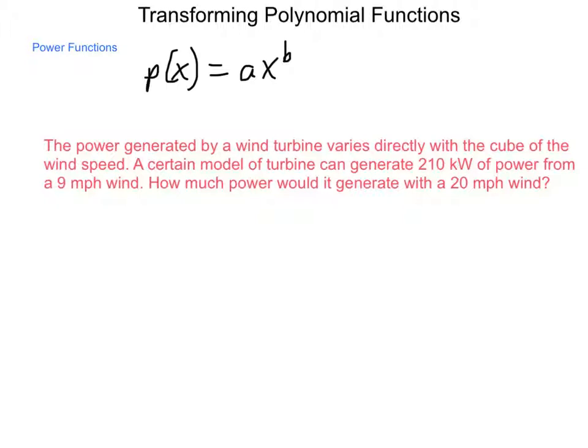And, in unit 2, we talked about direct variation. These power functions have characteristics similar to those direct variations, and the wording for that characteristic is similar. For instance, the power generated by a wind turbine varies directly with a cube of the wind speed. A certain model of turbine can generate 210 kilowatts of power from a 9 mile an hour wind. How much power would be generated from 20 mile an hour wind?